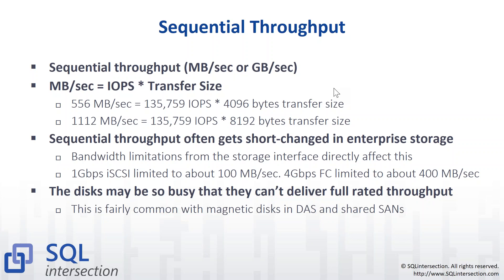Enterprise storage sometimes short-changes sequential throughput because of bandwidth limitations somewhere along the storage chain. An old worst-case scenario would have been 1 gigabit per second iSCSI talking to an iSCSI SAN — you'd be limited to around 100 megabytes per second, which is pretty pathetic. Also, sometimes your disks are just so busy that they can't deliver their rated throughput for sequential operations.